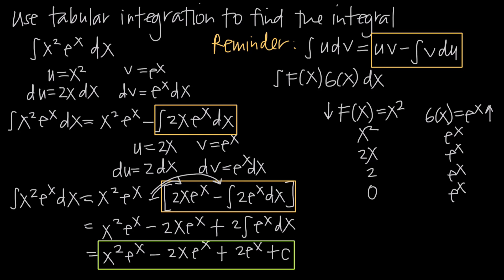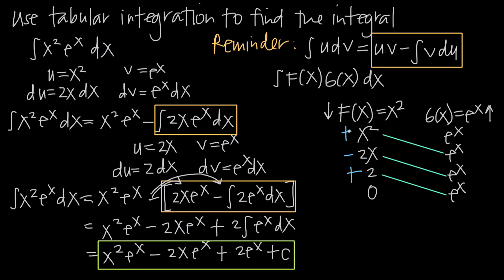Now we draw diagonal lines connecting each value in the f(x) column to the value one row lower in the g(x) column — so x squared connects to the second-row e to the x, 2x connects to the next e to the x, and 2 connects to the next. When you hit the 0 term, you don't connect it to anything. Then we add alternating signs to the f(x) column, always starting with positive and alternating: positive, negative, positive — continuing down to the last non-zero term.